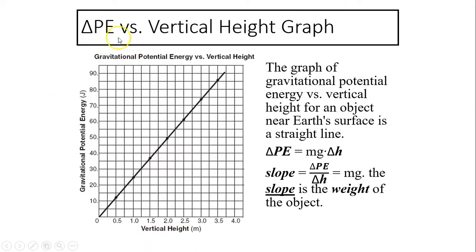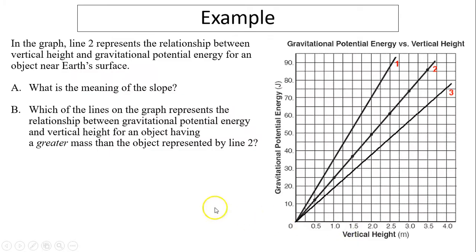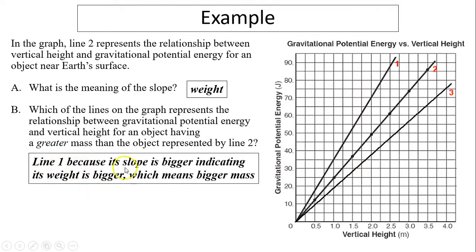A graph of gravitational potential energy versus vertical height for an object near Earth's surface is a straight line. The slope of this line is the weight of the object, because slope = ΔPE/Δh = mg. A steeper slope indicates greater weight, which means greater mass. So if you compare two lines, line one has the steeper slope, indicating its weight is bigger, meaning it has greater mass than the object represented by line two.